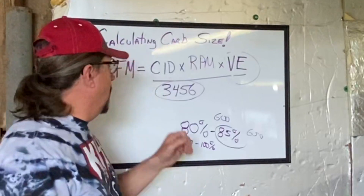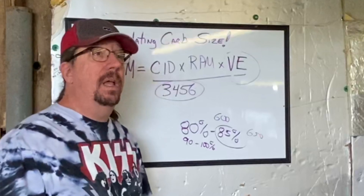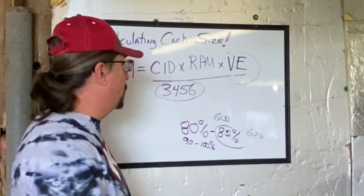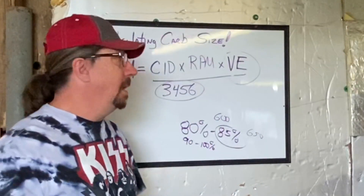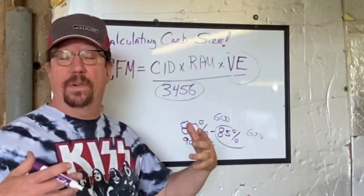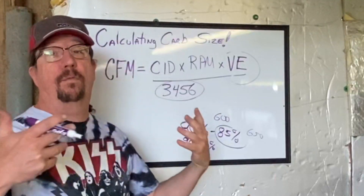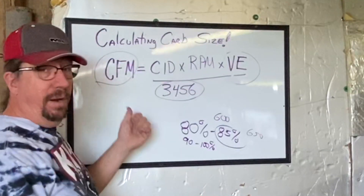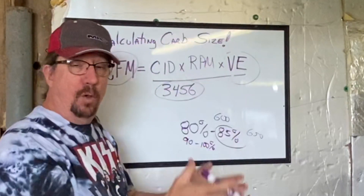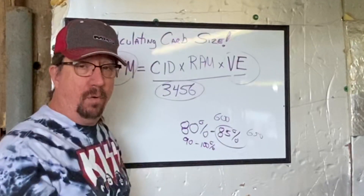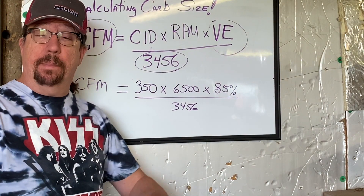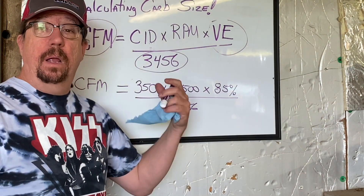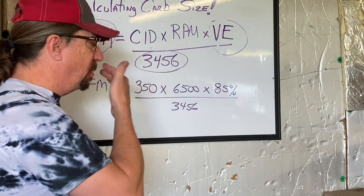RPM is the maximum RPM your engine can achieve — it has a lot to do with cam profile and where the power peak is. We're going to pick a number that's pretty realistic for the street: 6500 RPM. That's a lot of RPM. Cubic inch is the displacement of your engine — whether it's a 318 Mopar, a 350 Chevy, a 302 Ford, a 454, or a 426 Hemi. We're using 350 cubic inches as a common base number. It could be a 360 Mopar, 350 Chevy, or 351 Ford — they're all in the ballpark.